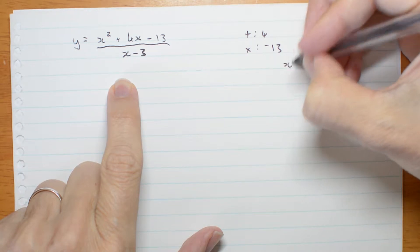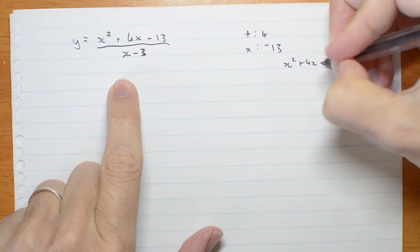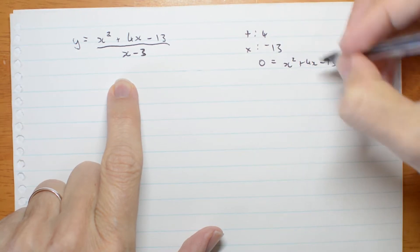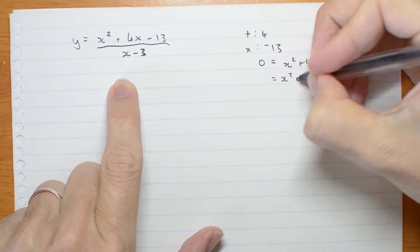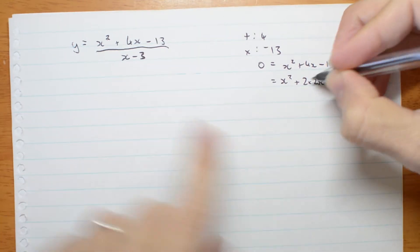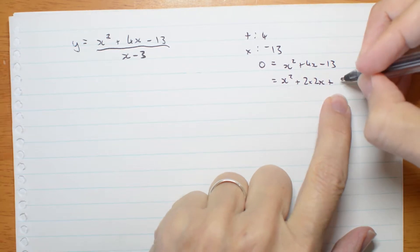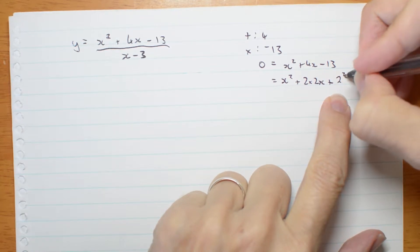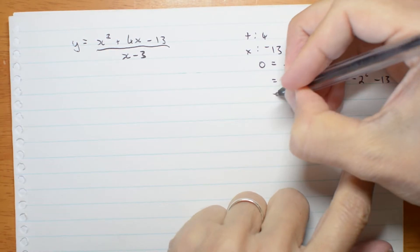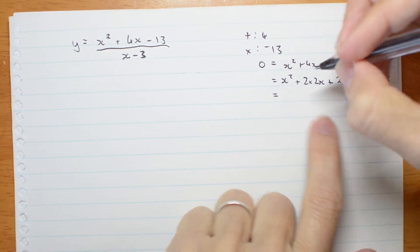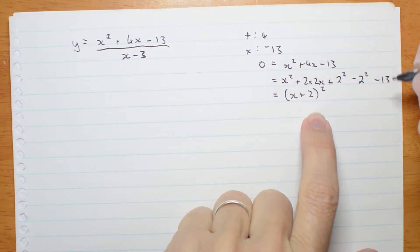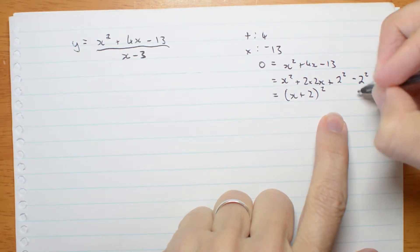Now let's have a look. X squared plus 2 times 2x. a squared plus 2ab plus b squared then will have to be 2 squared. Take away 2 squared, take away the 13 I already had. So that's x plus 2 squared. That's 4 take 13 is negative 17.